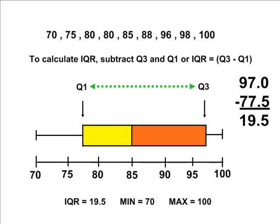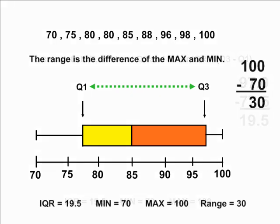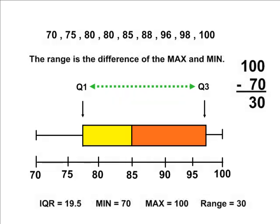Make sure not to confuse the interquartile range with just the range. If you are asked for the range of your box and whisker plot, this is simply the difference between the minimum and the maximum. The difference between 70 and 100 for our given data set is 30, so the overall range of our data is 30 and the interquartile range is 19.5.